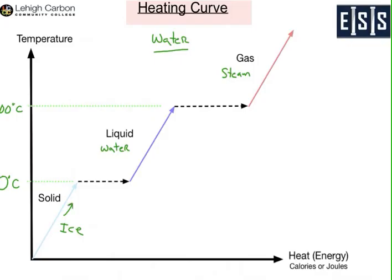Once you hit zero degrees centigrade, you have ice at zero. If you give it any more energy, you begin — as the green arrow shows — to melt the ice. What's important to remember is that all along this dashed line, you have an ice and water mixture, but the temperature remains constant at zero degrees.